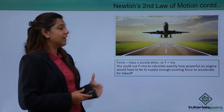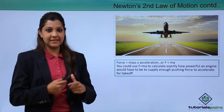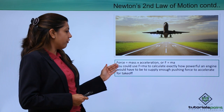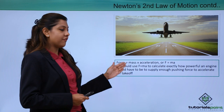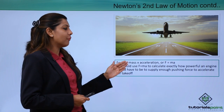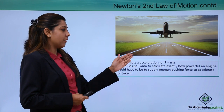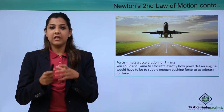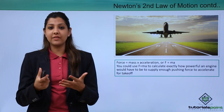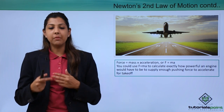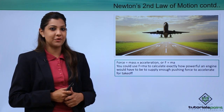Newton's second law has a simple formula: Force equals mass times acceleration, or F = ma. This formula can be used to calculate how powerful an engine would need to be to supply enough pushing force to accelerate an aircraft for takeoff. The force required must be significantly greater — double or triple — the weight of the aircraft to generate enough push for takeoff.